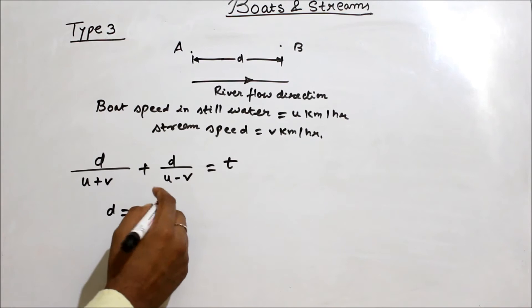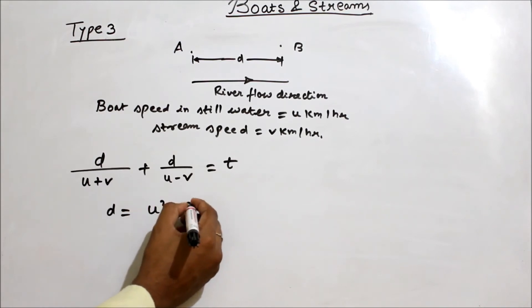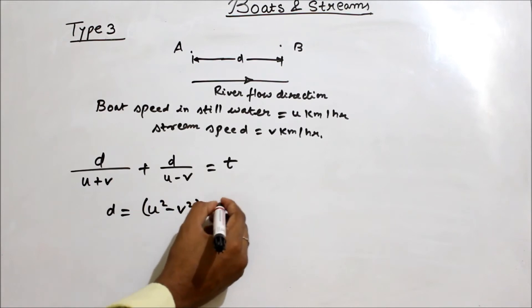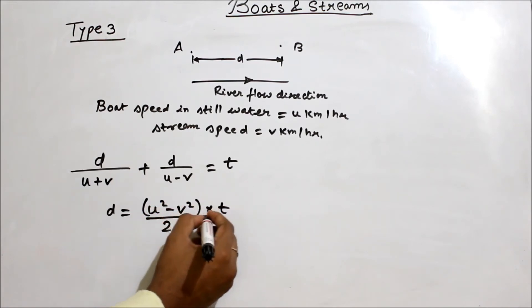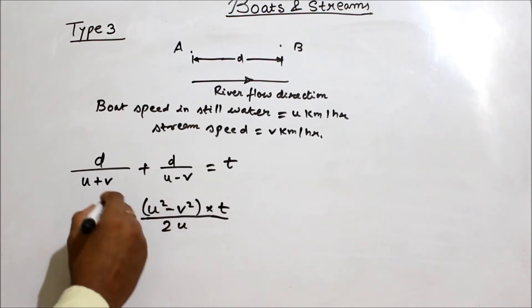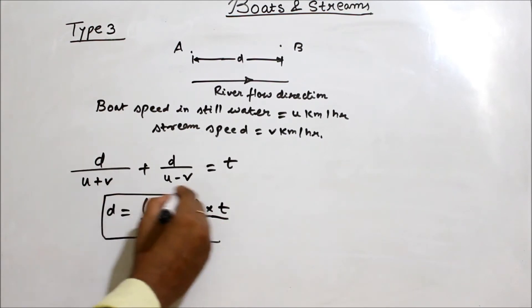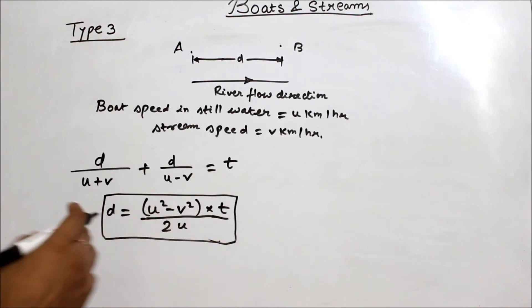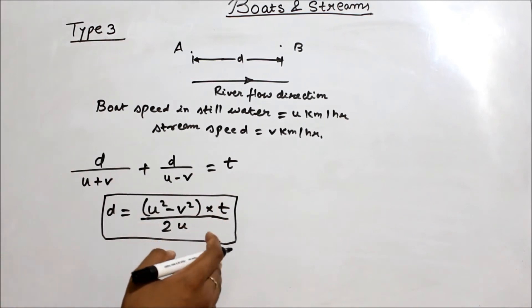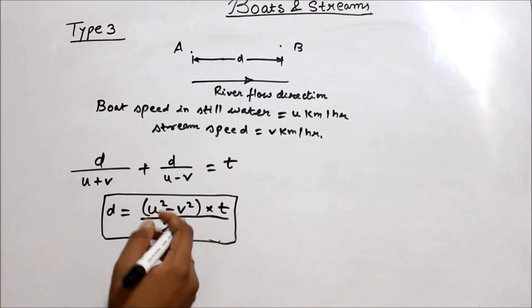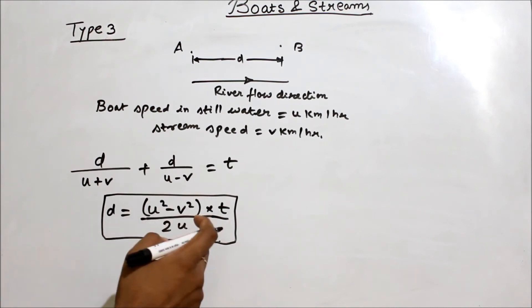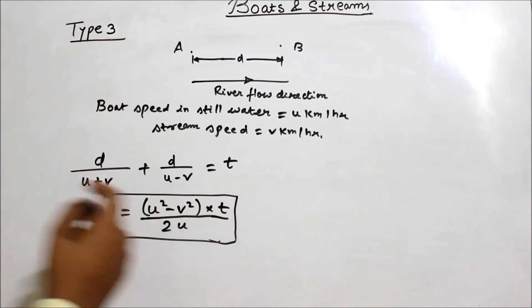When you solve it, the answer will be u squared minus v squared into t divided by 2u. This will be the distance. If you remember this formula, you can solve this problem immediately. How do we apply this formula? We will see the same problem.